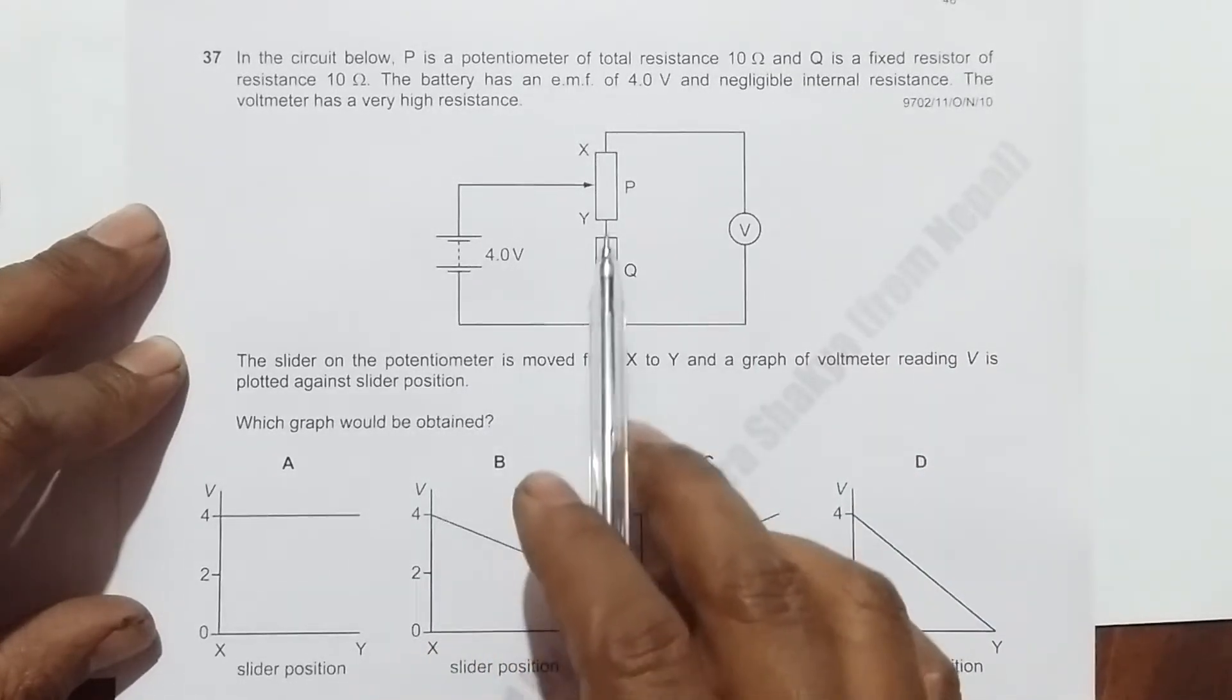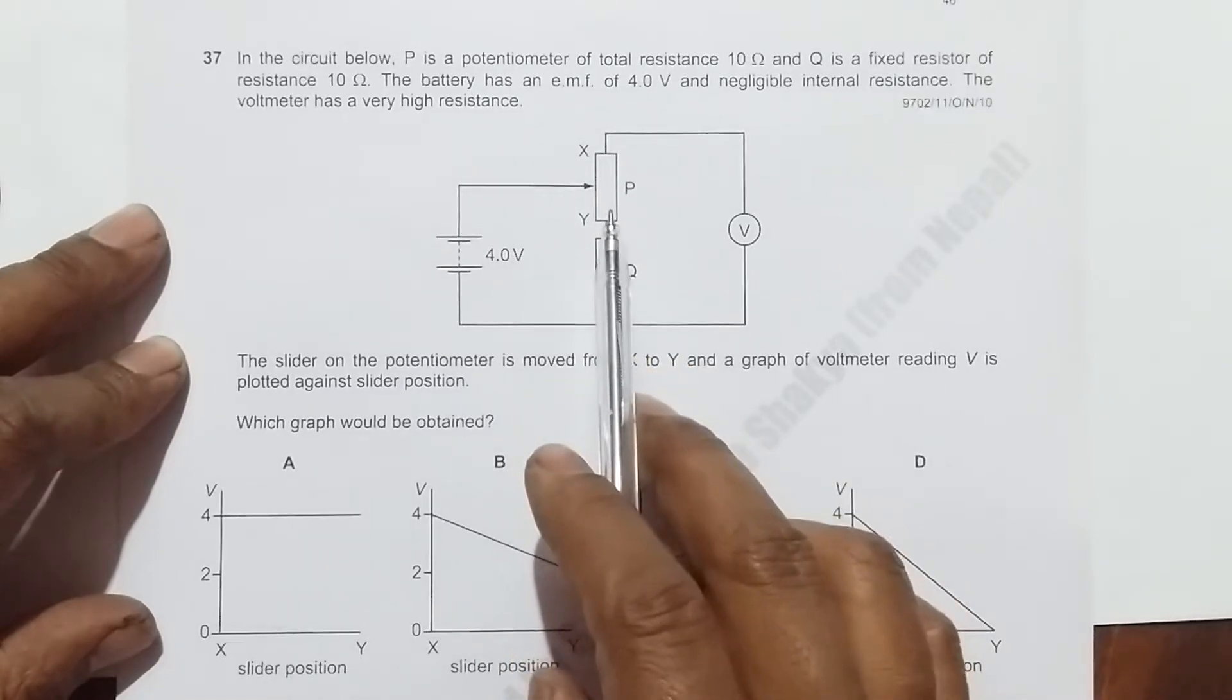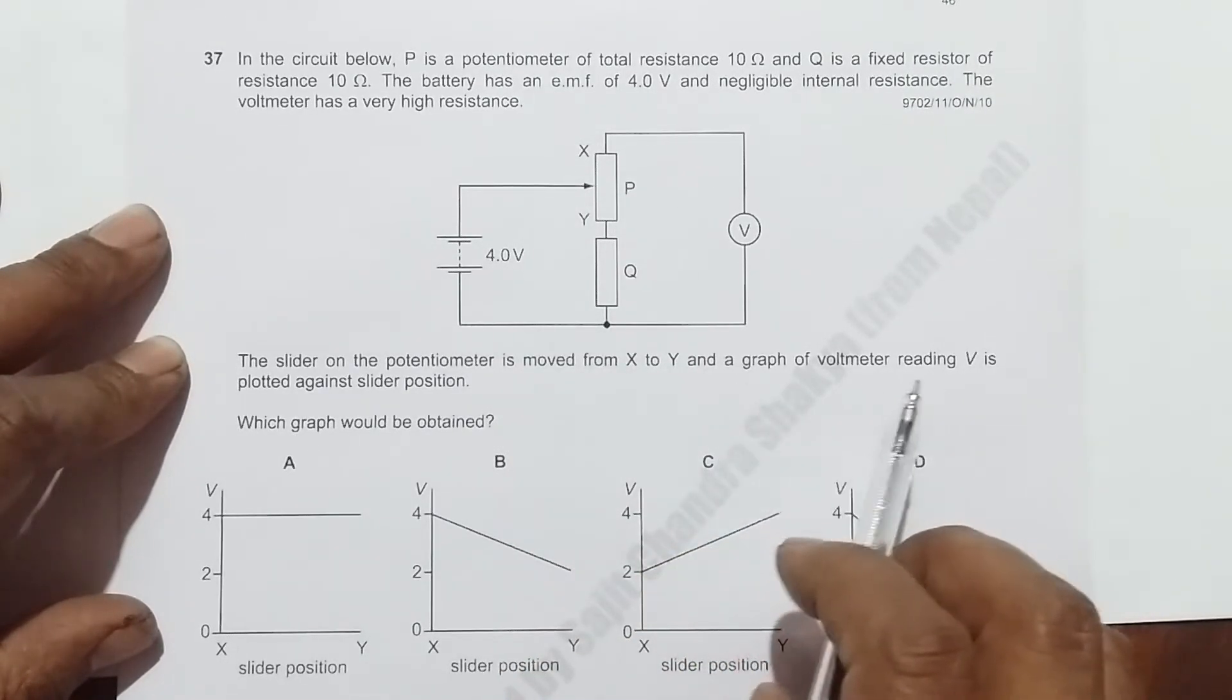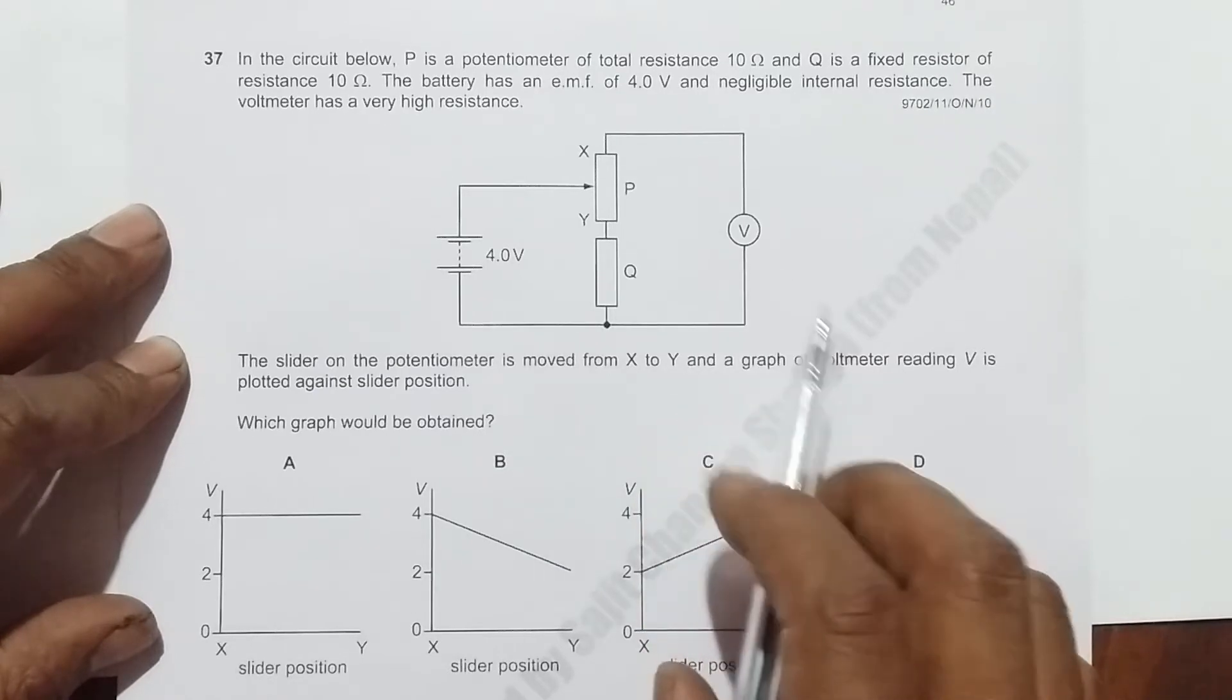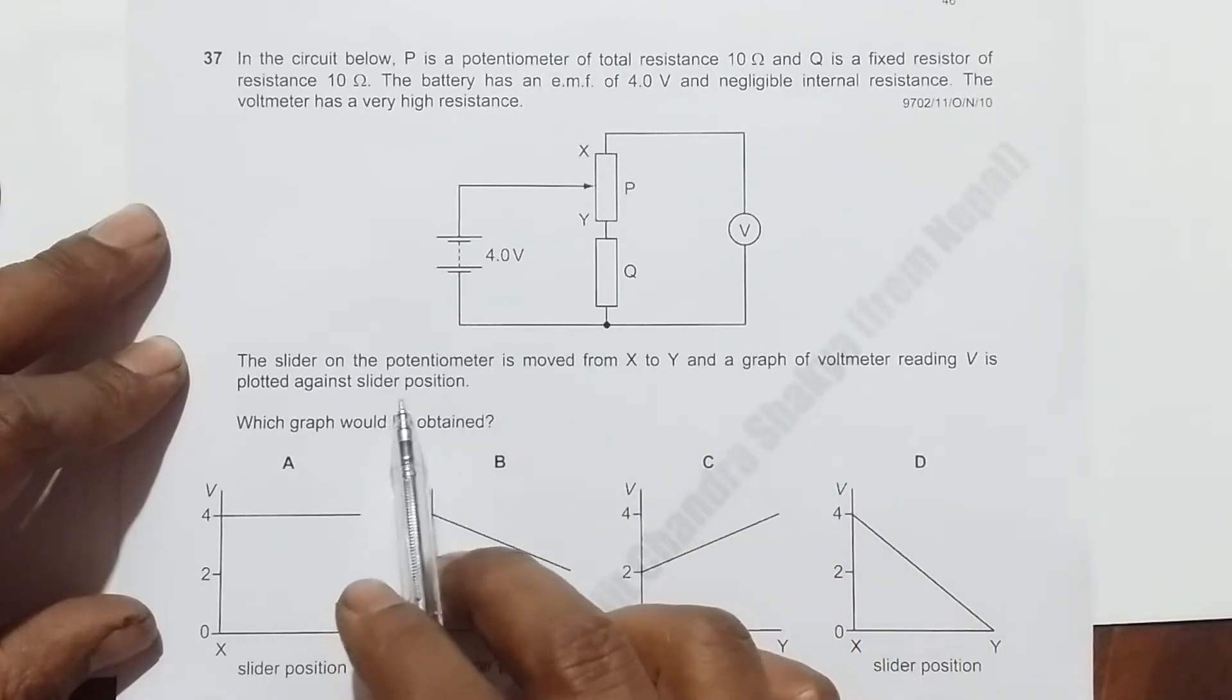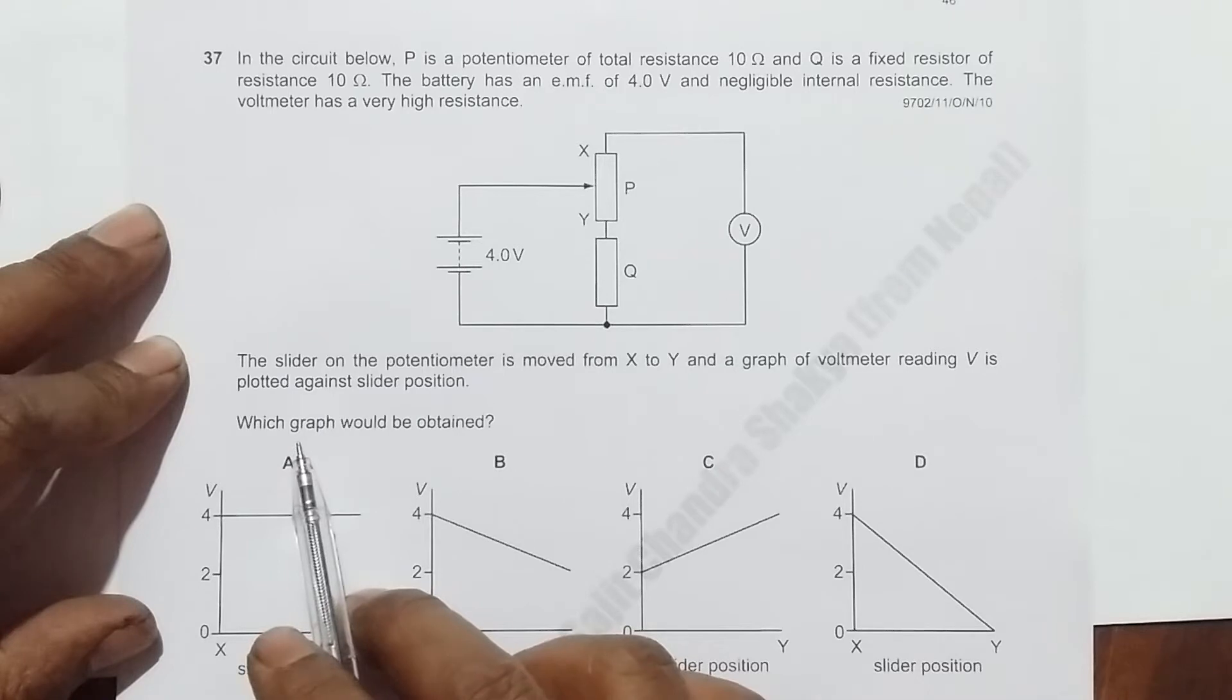When you move the slider from X to Y and plot a graph of voltmeter reading versus slider position, it asks which graph would be obtained.